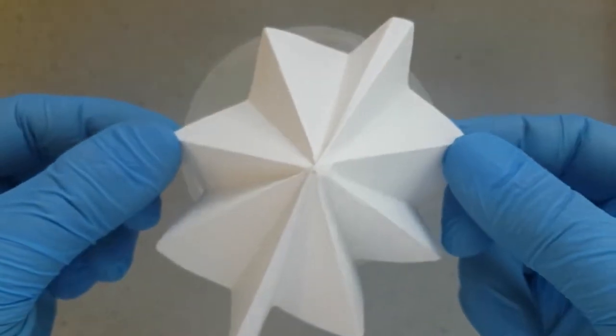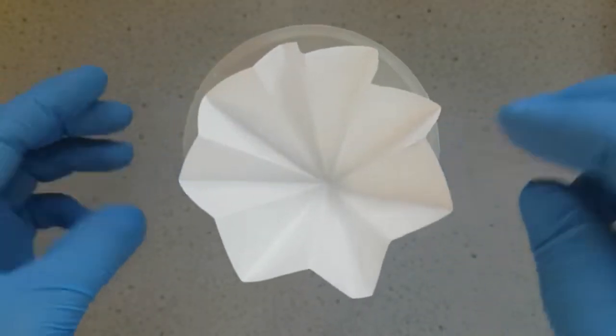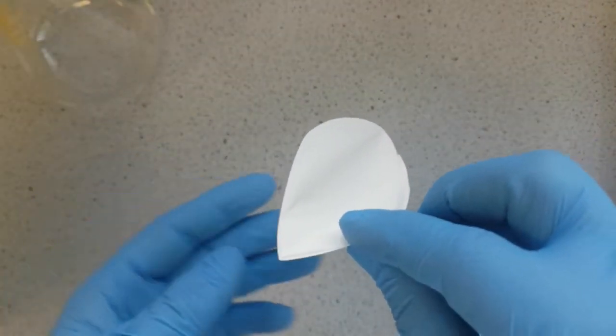This is because we've increased the surface area of our filter paper compared to, say, if we did a cone-shaped fold.